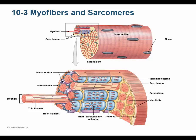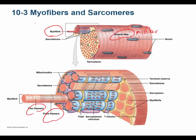Now let's look at the ultrastructure of the cell — inside the myofiber. We go through the phospholipid bilayer into the cell, where we find mitochondria and, mainly, contractile proteins filling the cell. Inside the myofiber are structures called myofibrils, and myofibrils are made up of myofilaments.